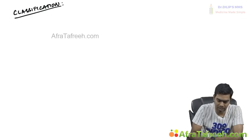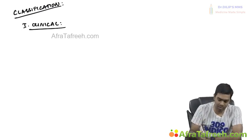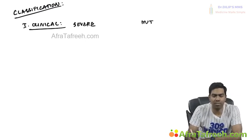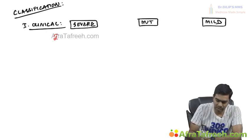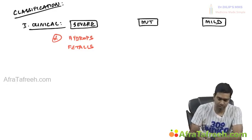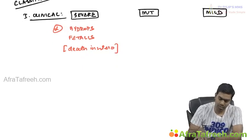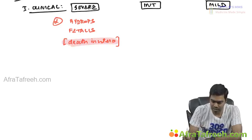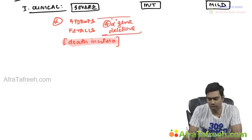Classification of thalassemia can be clinical or genetic. Clinically, there are three types: severe forms, intermediate forms, and mild or minor forms. In alpha thalassemia, the severe form is hydrops fetalis, where the fetus dies in utero — this is generally due to all four alpha gene deletions. In beta thalassemia, the severe form is called thalassemia major, also referred to as Cooley's anemia.